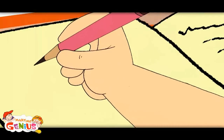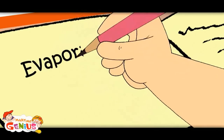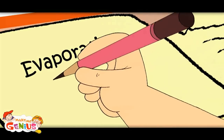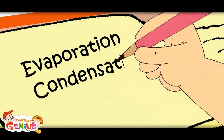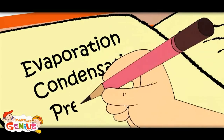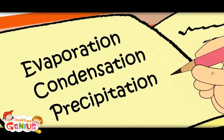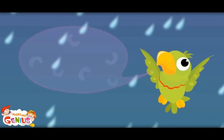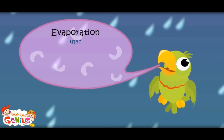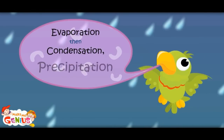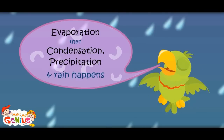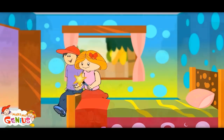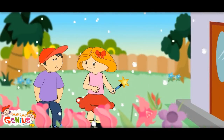Then more water drops combine and it precipitates. Let me note it down: first evaporation happens, then water molecules come close and condensation happens, then drops become bigger and heavier and precipitation happens. First evaporation, then condensation, then precipitation — that's how rain happens.